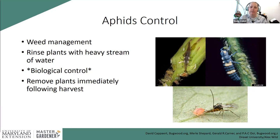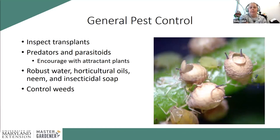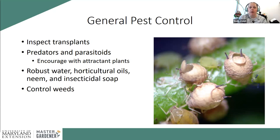Aphids are so small they can't climb back up onto your plant once knocked off. Biocontrol is a major option — lacewing larvae, ladybug larvae, and parasitic wasps all prey on aphids. If a plant is really heavily infested, another option is to simply remove it before it spreads to others. For general prevention of both aphids and thrips, always inspect transplants before purchasing — flip over the leaves and check, especially plants from big box stores.